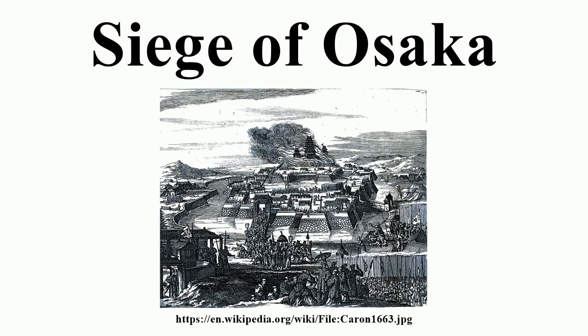A week later, he attacked the village of Imafuku with 1,500 men against a defending force of 600. With the aid of a squad wielding arquebuses, the shogunate forces claimed another victory. Several more small forts and villages were attacked before the siege on Osaka Castle itself began on 4 December.